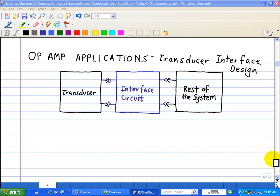Okay, another op-amp application deals with transducer interface design. Now, transducers are key elements of instrumentation systems that monitor, measure, and control physical processes. A transducer is a key device that converts a process variable, let's say temperature, pressure, motion, or light, into an electrical signal. So, coming out of this transducer is an electrical signal.